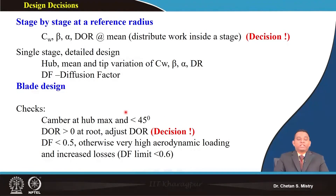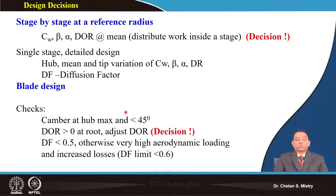When going stage to stage, we calculate the whirl velocity component, beta angle, alpha angle, and degree of reaction. At mid station, sometimes we assume an initial guess of degree of reaction. The kind of whirl distribution selected — whether free vortex or forced vortex — is also the designer's choice. For single stage design, we do all our calculations in terms of flow parameters: degree of reaction, diffusion factor, stage loading coefficient, peripheral speed, and all those initial guess parameters.